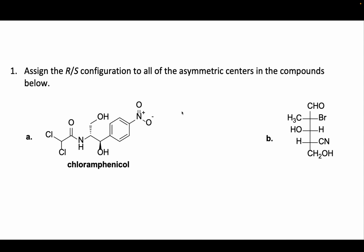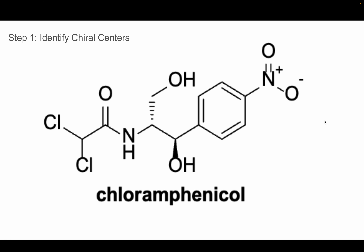Below we have a line angle structure for compound A, and in compound B we have a Fischer projection. So step one for identifying — we're going with molecule A to start — we have to identify the chiral centers.